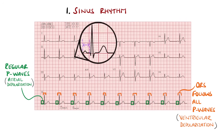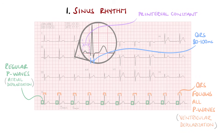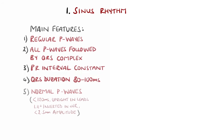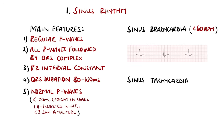The PR interval, which is the time between the start of the P wave and initiation of the QRS, remains constant throughout. The QRS complex itself represents ventricular depolarisation and is normally narrow, typically between 80 and 100 milliseconds. In adults, if the rate is below 60 beats per minute this is sinus bradycardia, and above 100 beats per minute is sinus tachycardia.